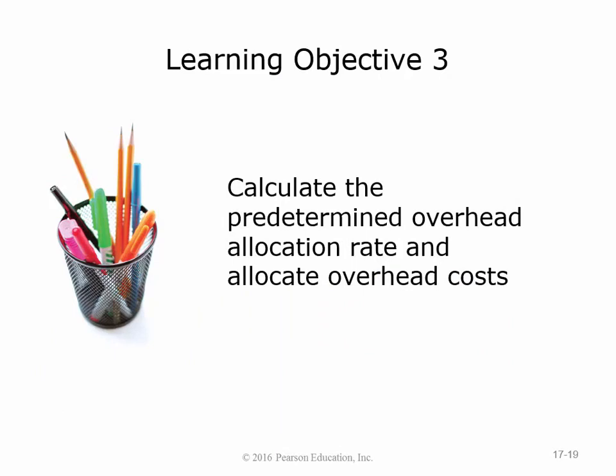Objective 3 is the confusing one: calculate the predetermined overhead rate and allocate overhead costs. Here's the problem — we don't know how much overhead we're going to have until after the fact. It's not until the end of the year that you can total up all your utilities, depreciation, manager salaries, indirect materials, and indirect labor to know your manufacturing overhead. So at the beginning of the period, you have to make an educated guess by creating what's called a predetermined overhead rate.